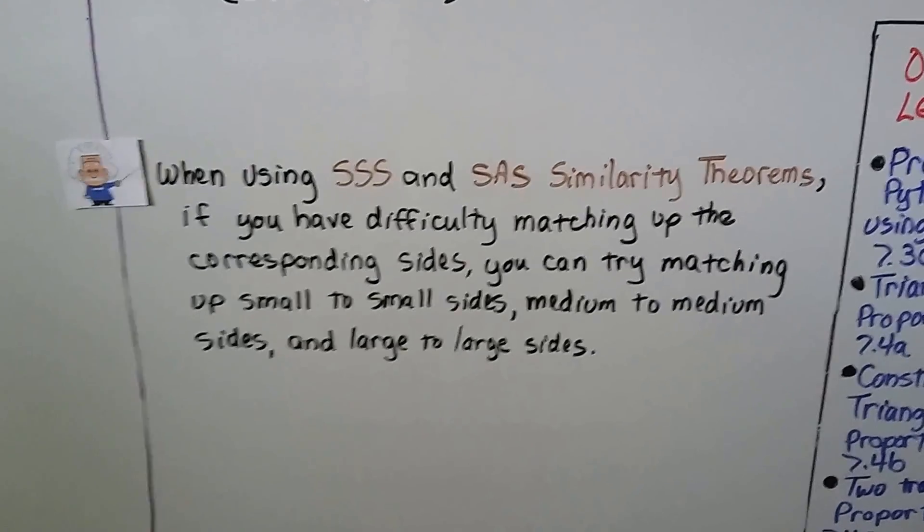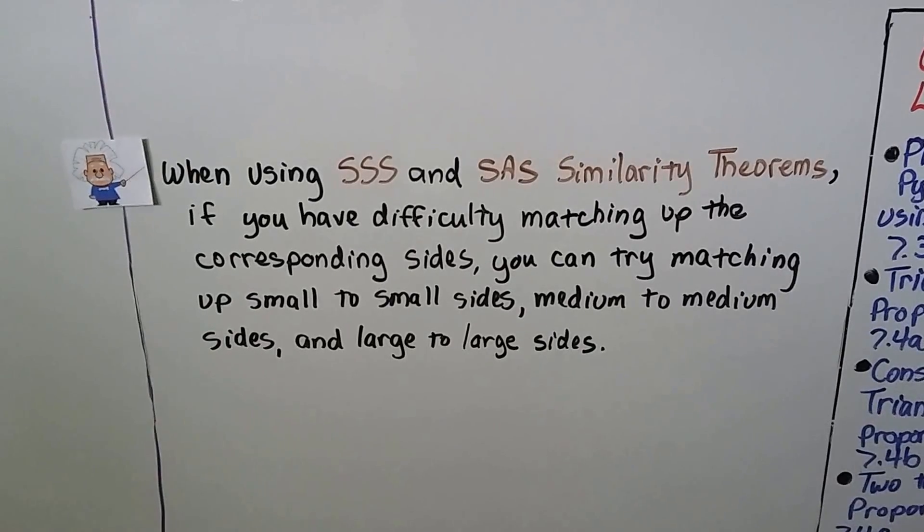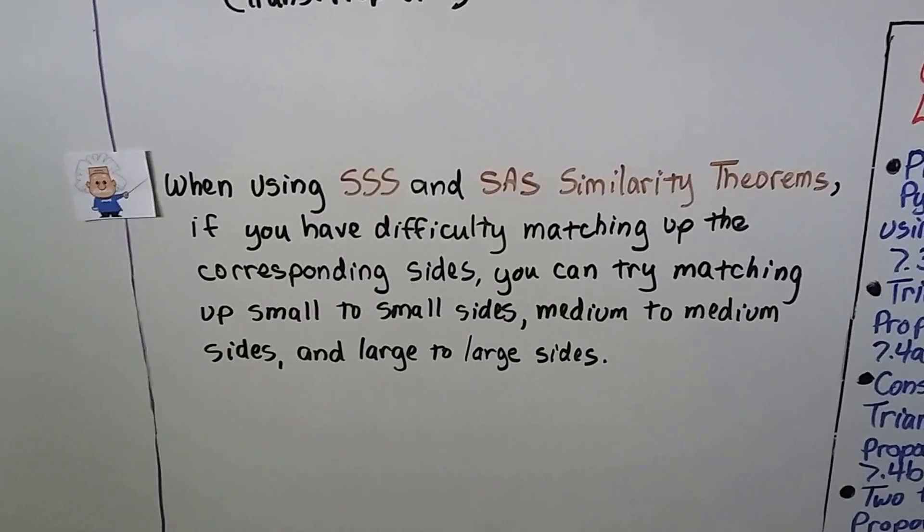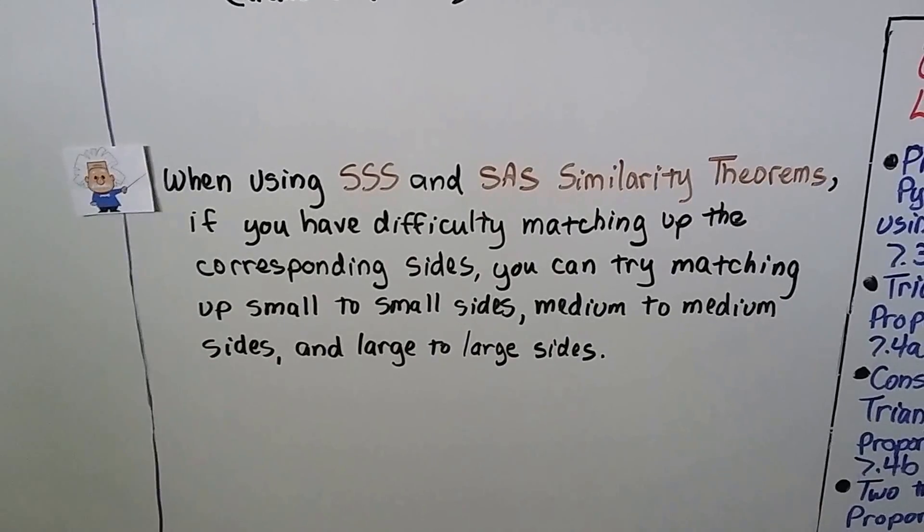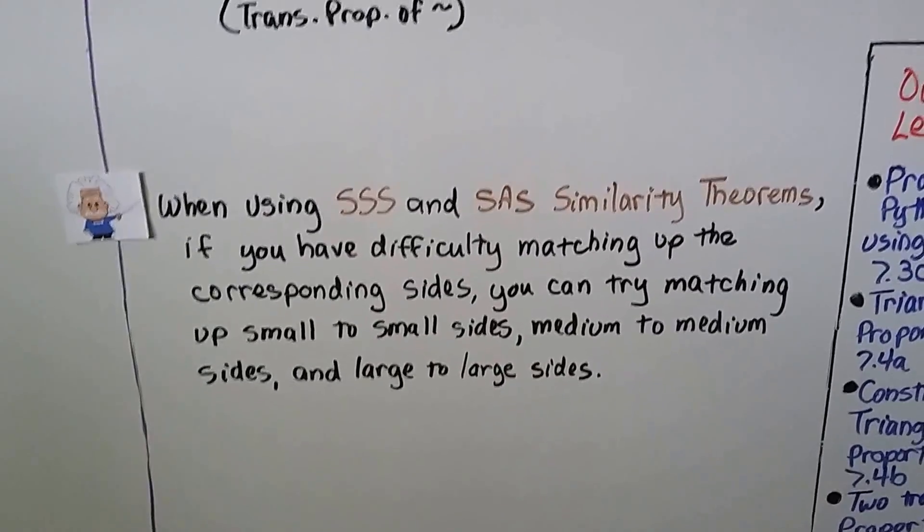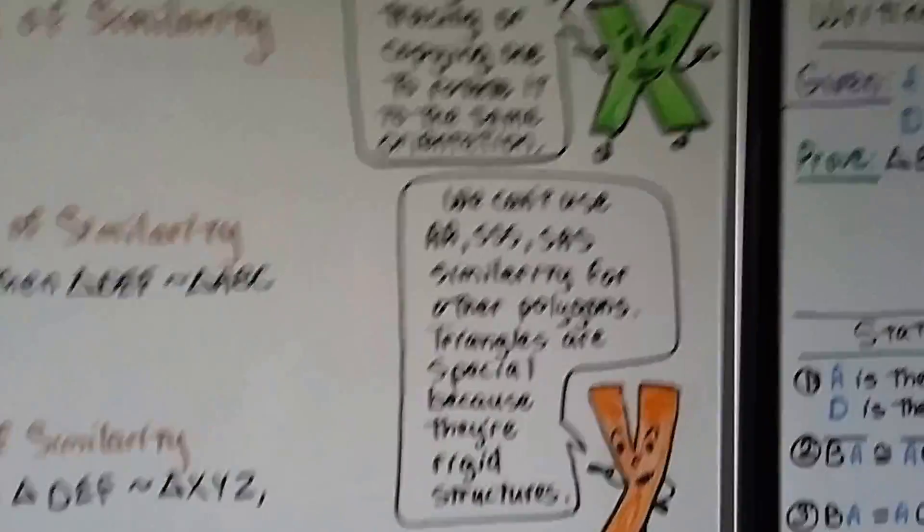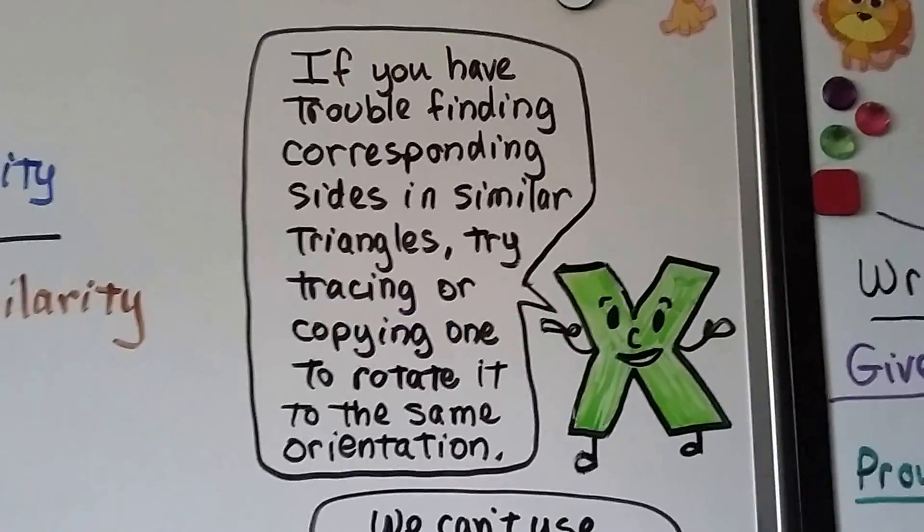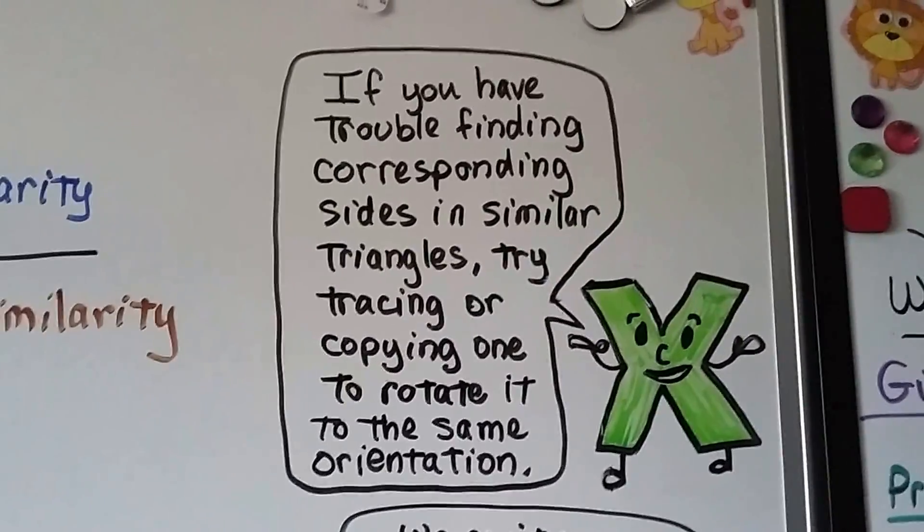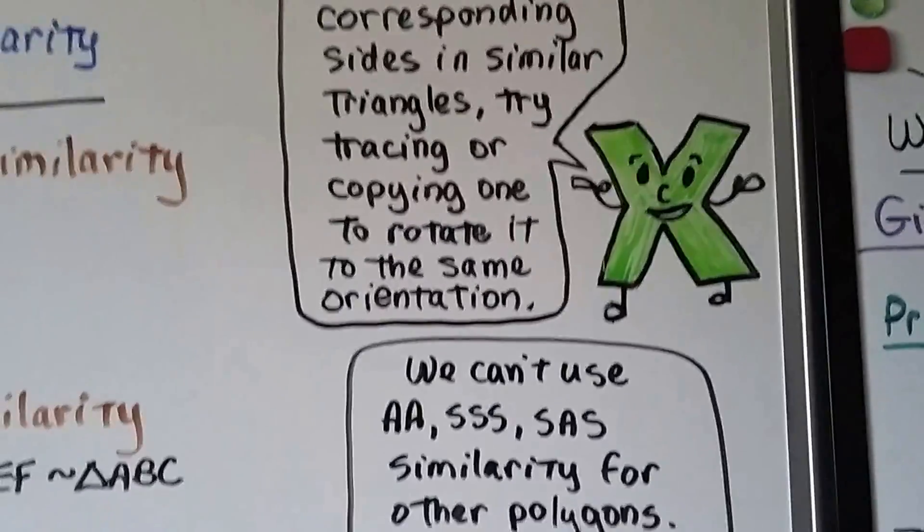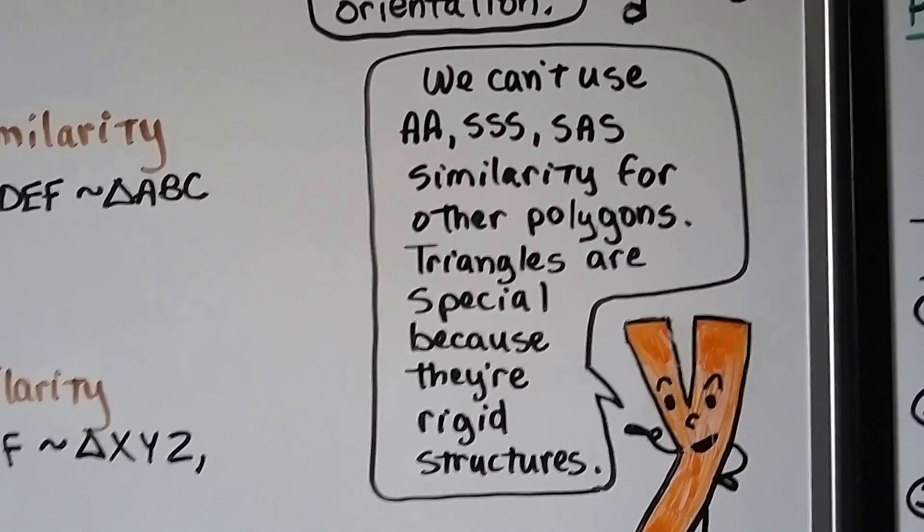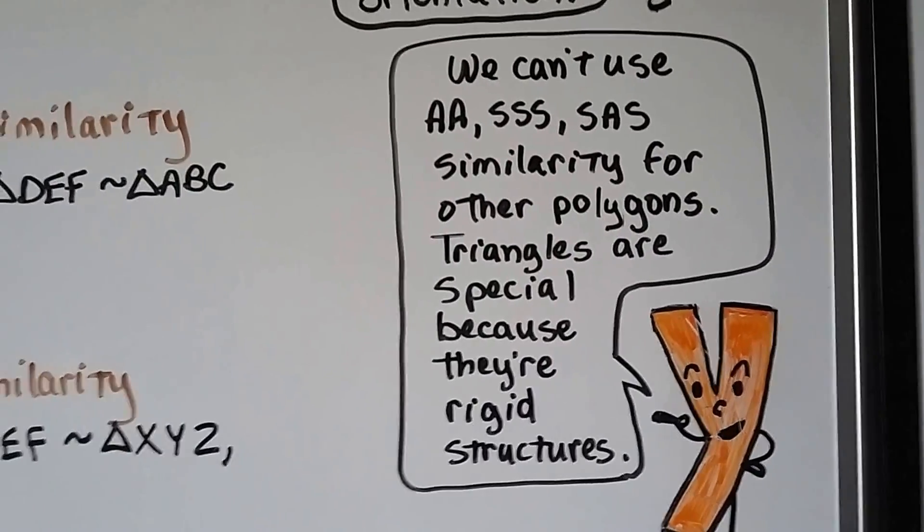When using SSS, that side-side-side, and SAS, the side-angle-side similarity theorems, if you have difficulty matching up corresponding sides, you can try matching up small to small sides, medium to medium sides, and large to large sides. And if you have trouble finding corresponding sides in similar triangles, you can try tracing or copying one to rotate it to the same orientation as the other one. And we can't use AA, SSS, and SAS similarity for other polygons. Triangles are special because they're rigid structures.